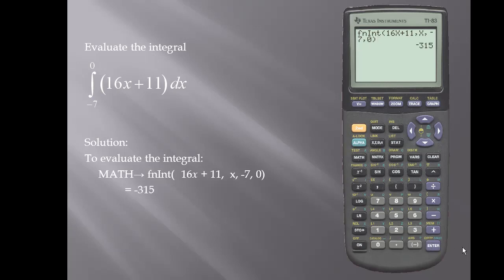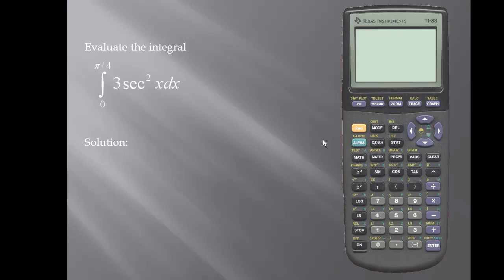And we have a total area of negative 315. Now we'll take a look at another example.